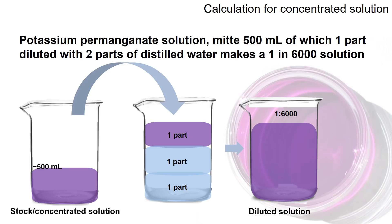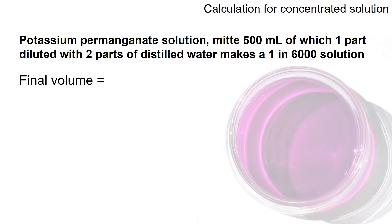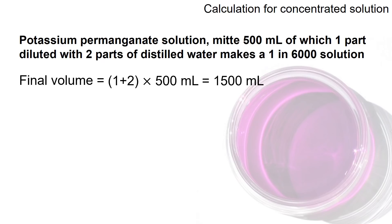First, you need to know the final volume. It doesn't state how much one part is, so let's take one part as 500 ml, since we need to prepare 500 ml. The total is three parts of the solution, which means three times 500 ml, giving us 1500 ml as the final volume.